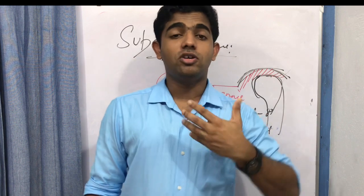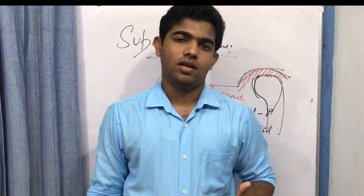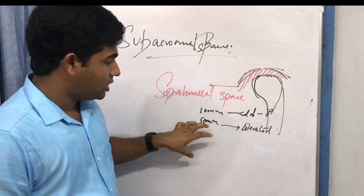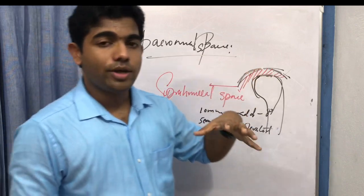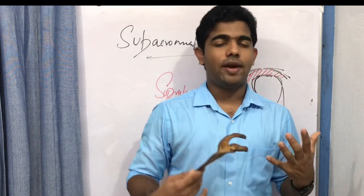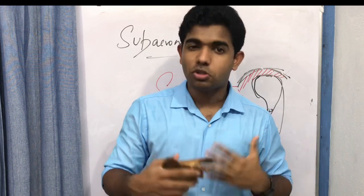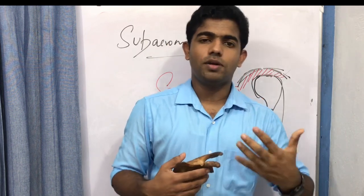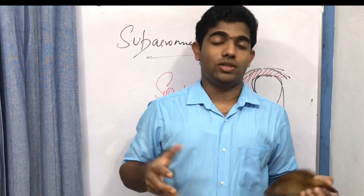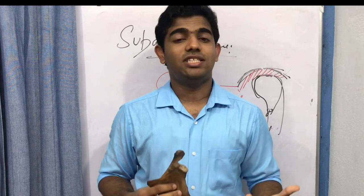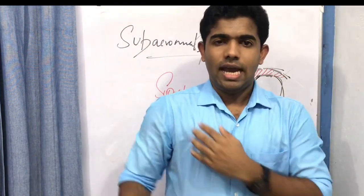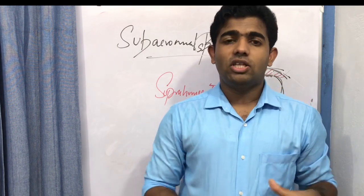To summarize the subacromial space: with the arm adducted at 0 degrees, the space is 10 millimeters; with arm elevated, it decreases to approximately 5 millimeters. The supraspinatus is the most superficial and most commonly impinged structure. At 90 degrees of elevation, the tendon rotates medially so it no longer rests between the bony prominences, and thus impingement chances decrease at that range.